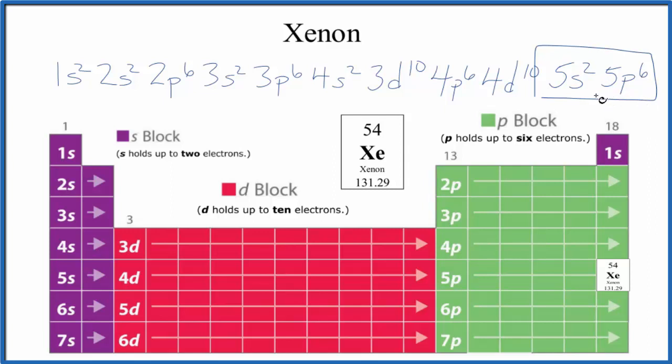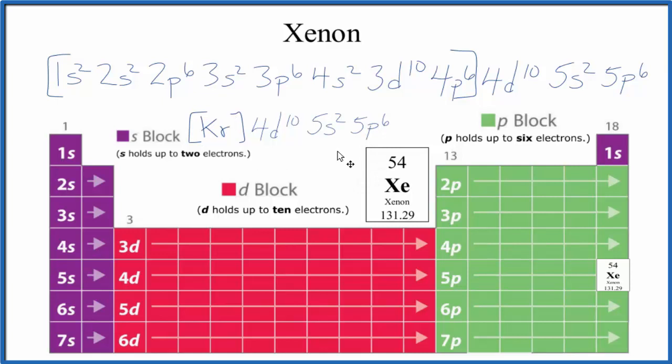Let's write the condensed notation real quick. For the condensed notation, I'd look at the noble gas that was before xenon. That's krypton. So I'm going to put this in brackets like this, Kr. And then krypton, if we look at krypton here, the electron configuration for krypton, that would look like this here. This would all make up krypton's electron configuration. And we just add this part right here to the end. So this is the condensed electron configuration for xenon.